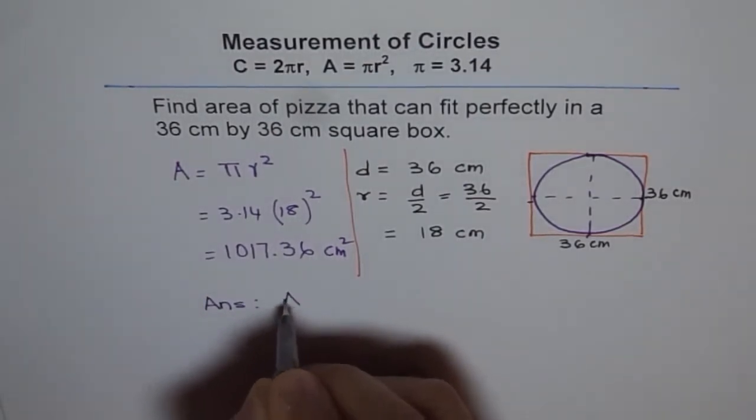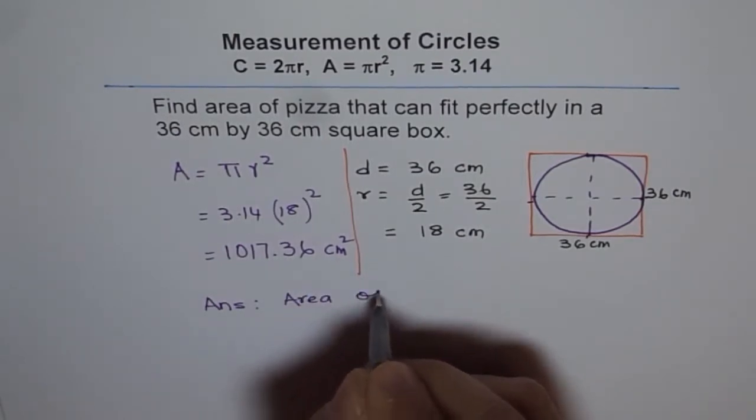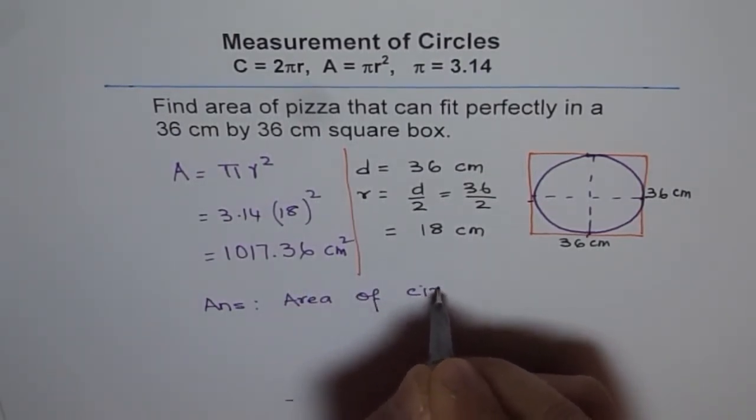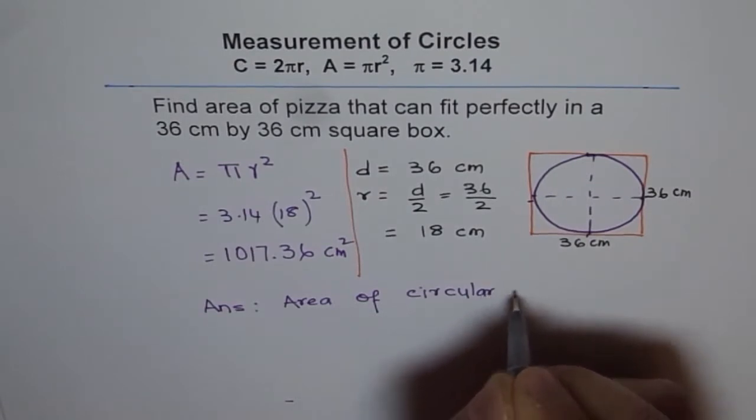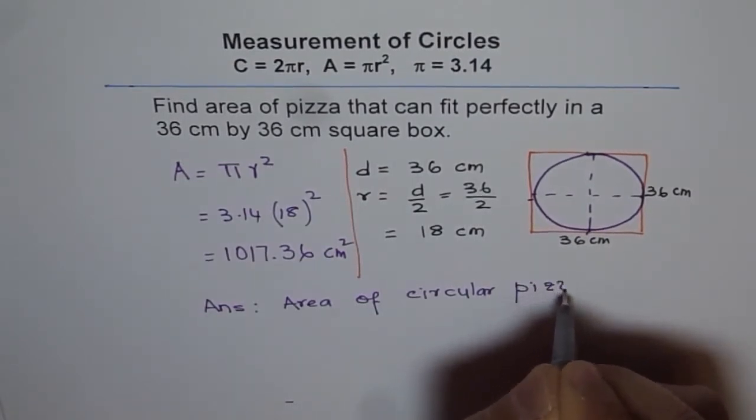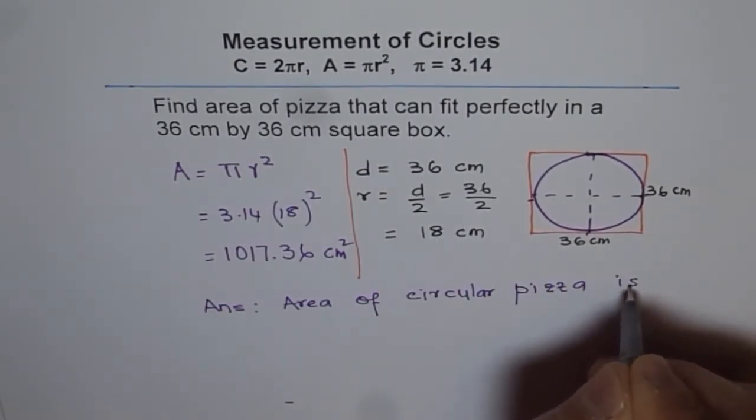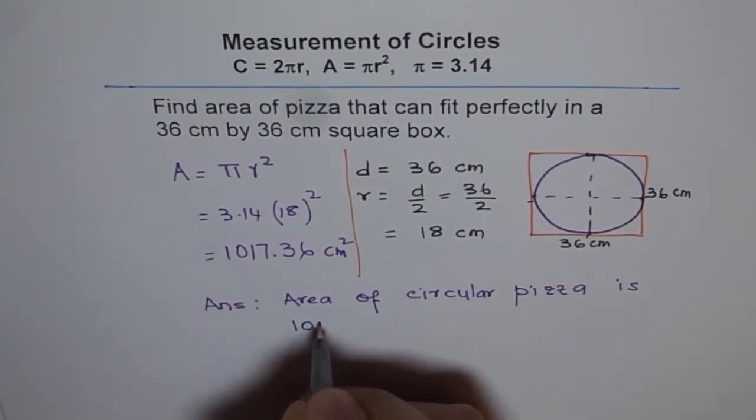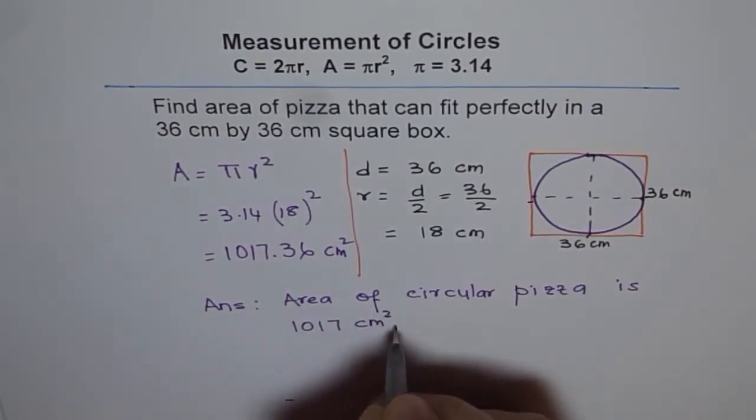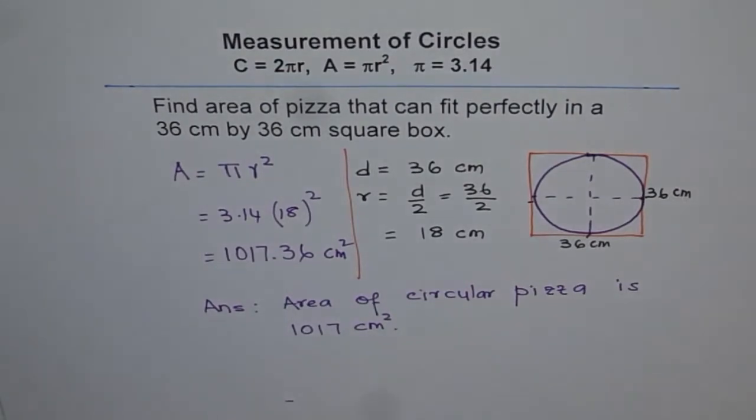So the answer is area of pizza, let me write circular here. Circular pizza is 1017 cm square. So that's how we did it.